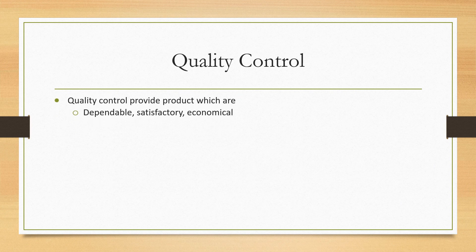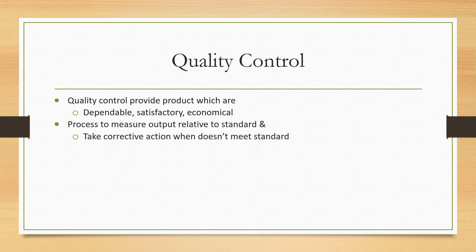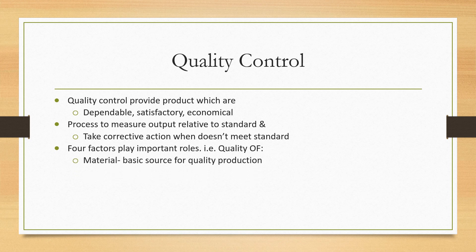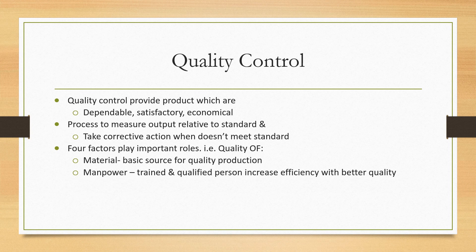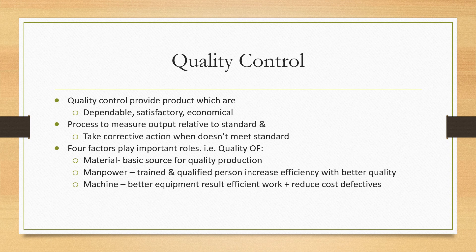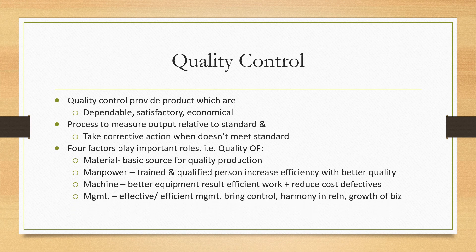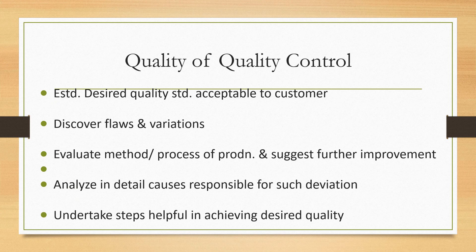Quality control provides products that are dependable, satisfactory, and economical. It is the process of measuring output relative to a standard and taking corrective action when it does not meet the standard. Four factors play an important role in quality: material (the basic source for quality production), manpower (trained and qualified persons increase efficiency with better quality), machine (better equipment results in efficient work and reduced defects), and management (effective and efficient management brings control, harmony, and growth of the business).